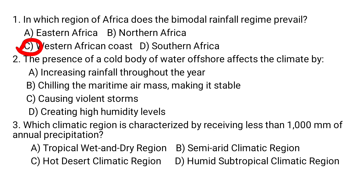There are two types of rainfall seasons. One occurs during March to May — that is March, April, and May.